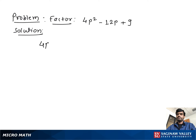Factor 4p square minus 12p plus 9. If we see the first and last term, it looks like a perfect square. So you can write the first term as 2p all to the square and the last term as 3 to the square.